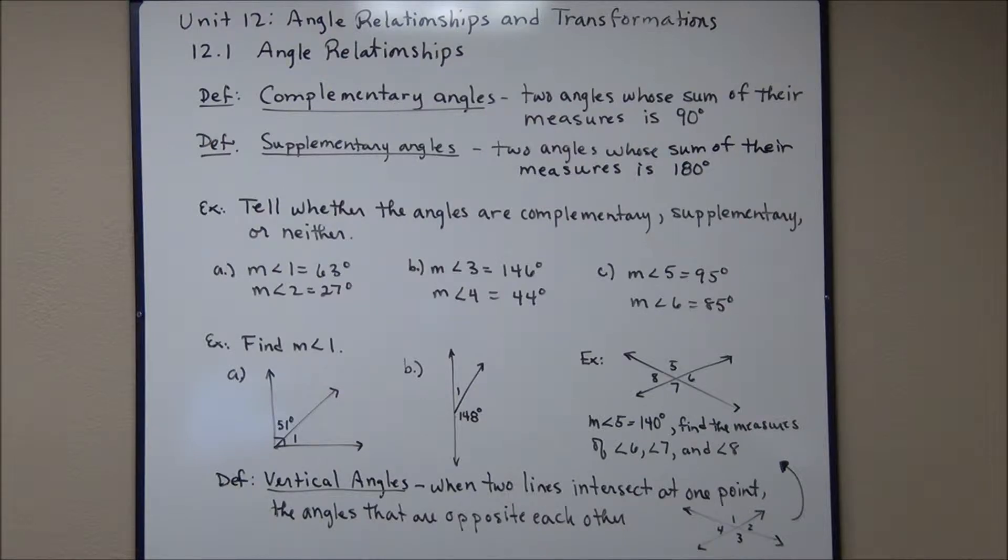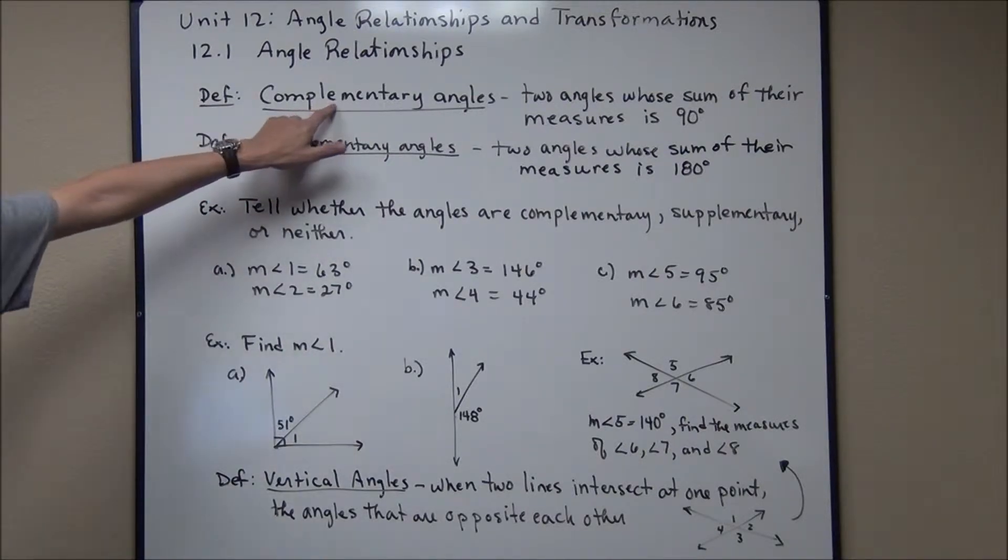We're going to talk about some special pairs of angles in this first lesson, starting with the idea of what we call Complementary Angles. Complementary Angles are two angles whose sum of their measures is 90 degrees. What that means is if I have two angles, I add up their measures, I get 90 degrees, they're considered Complementary Angles. One is a complement of the other. Notice it's spelled with an E, not with an I.